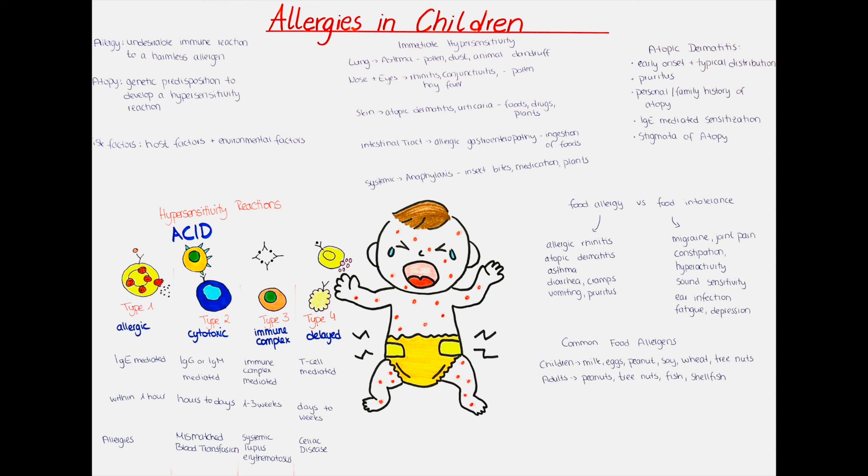If the patient cannot talk, we have to check for signs that their airways are obstructed. Those include cyanosis, labored breathing, decrease in breath sounds or wheezing. Also check the oral cavity and see if the cause might be a foreign body, blood in the airways or vomit.